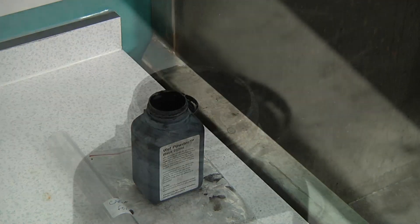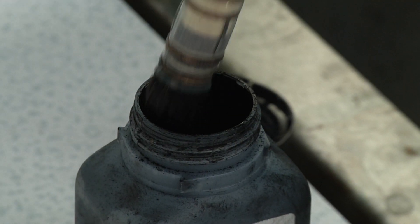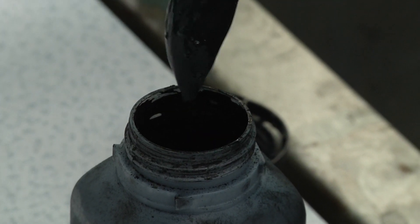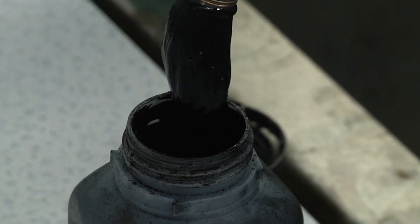Powder suspension is a relatively new enhancement technique which is used on non-porous surfaces. It is the suspension of a coloured metal in a detergent solution.